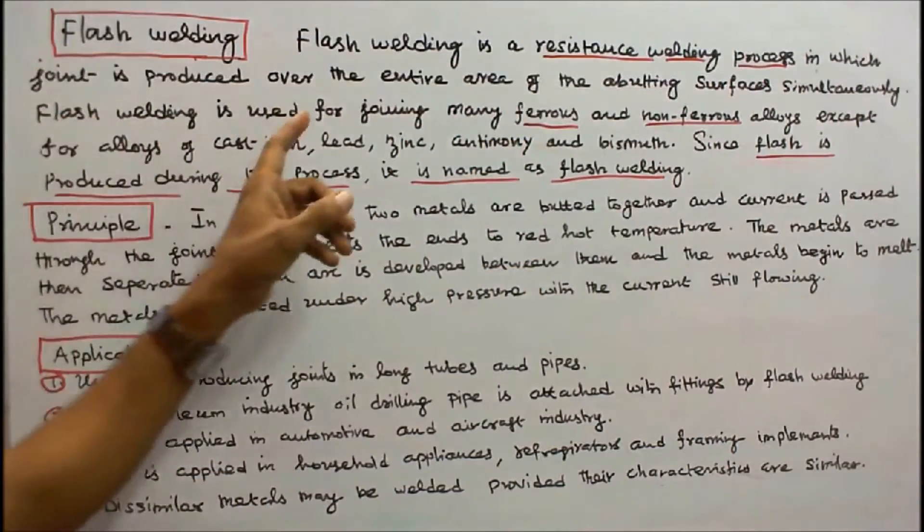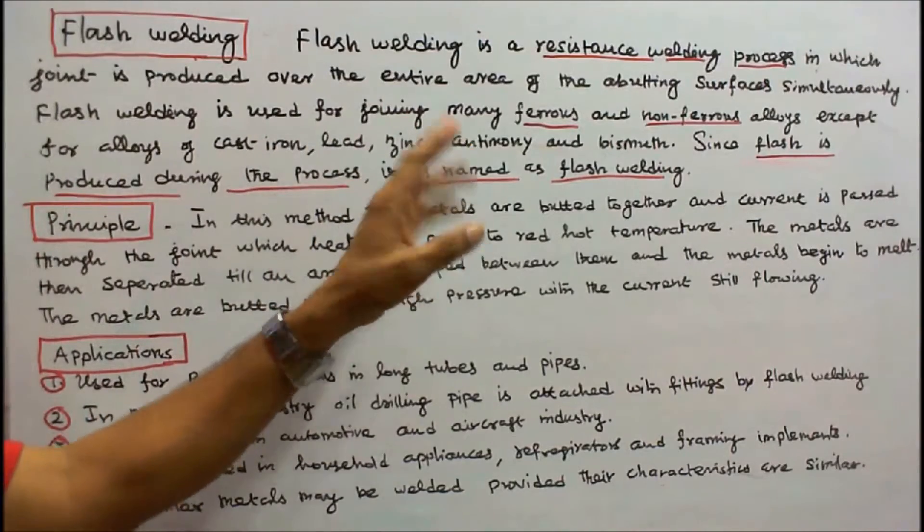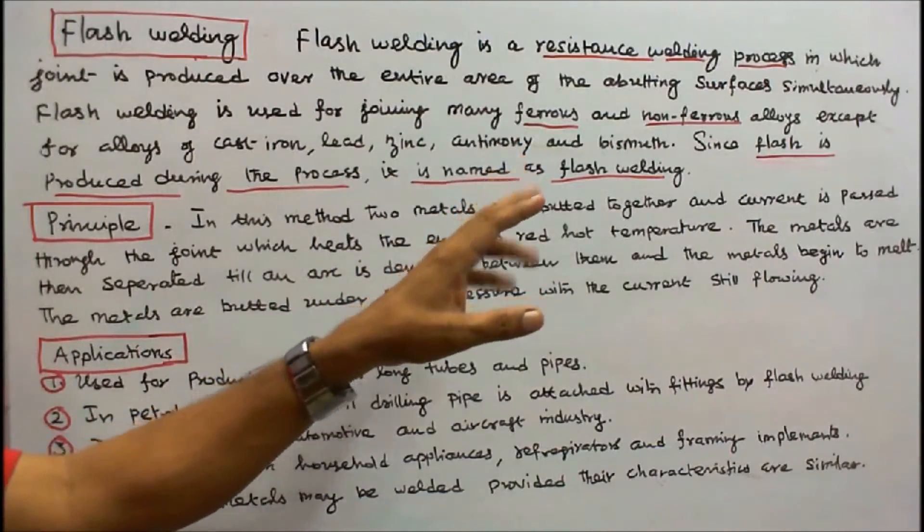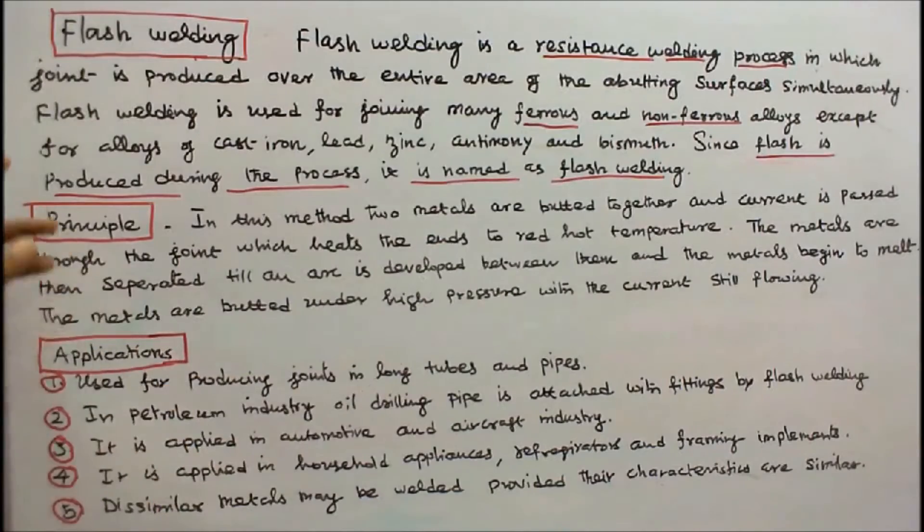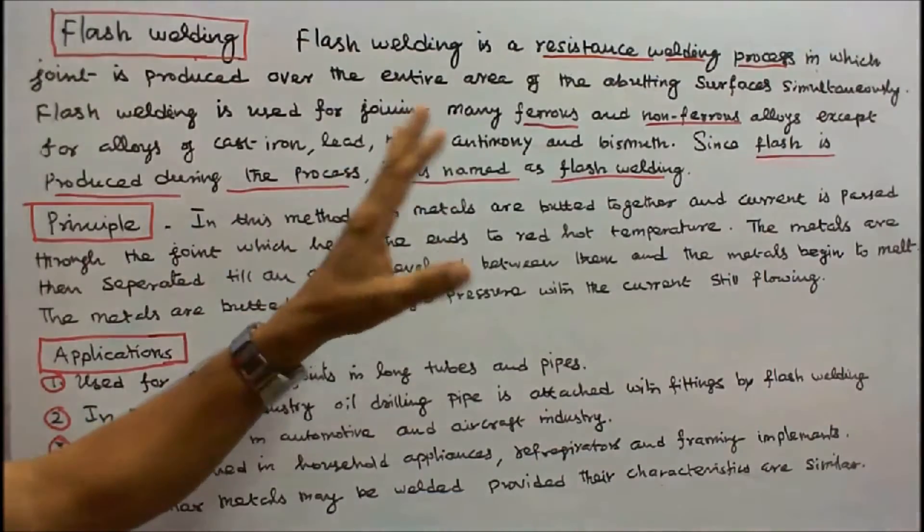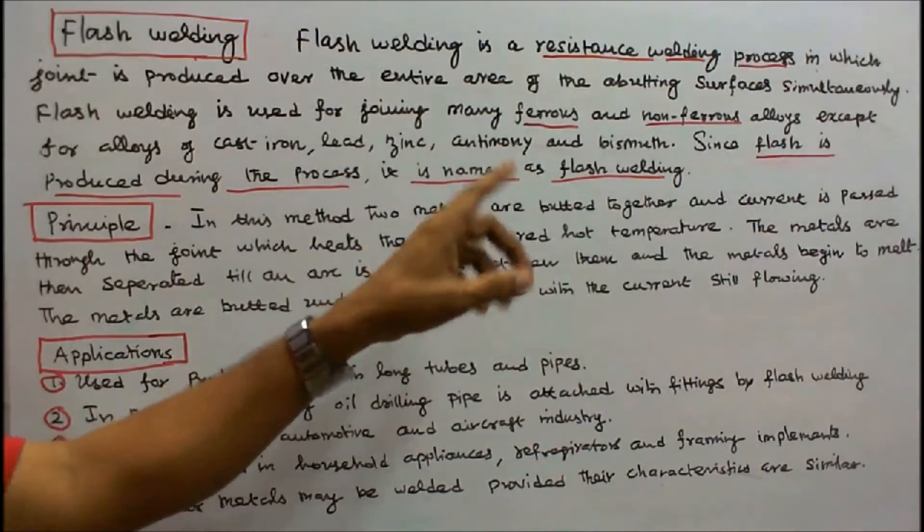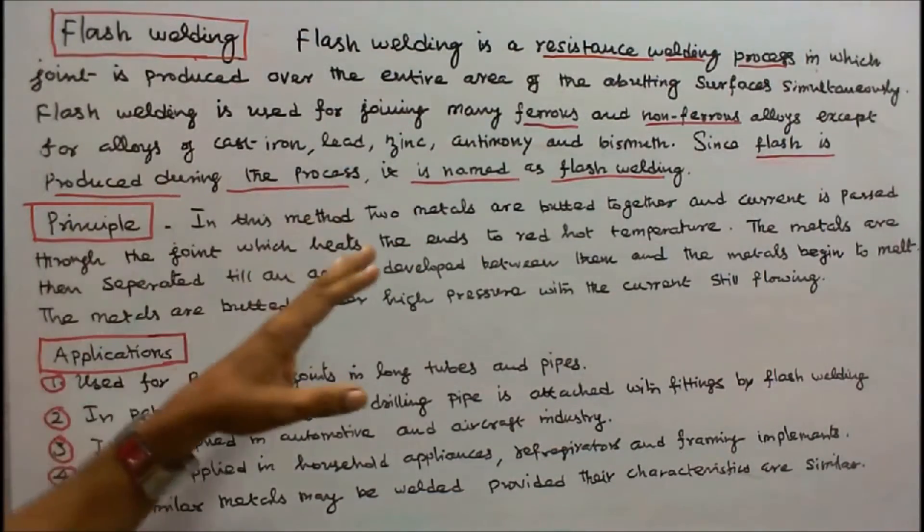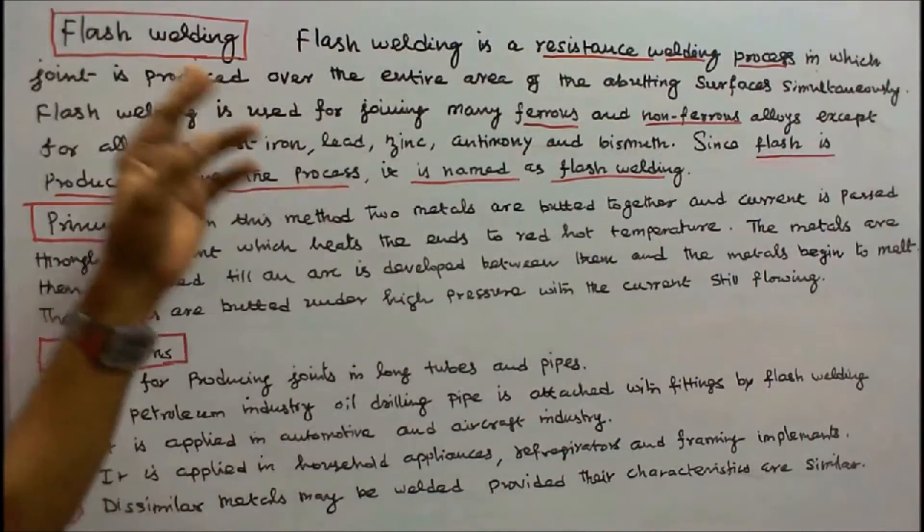Flash welding is used for joining many ferrous and non-ferrous alloys except for alloys of cast iron, lead, zinc, antimony and bismuth. Since flash is produced during the process it is named as Flash Welding.